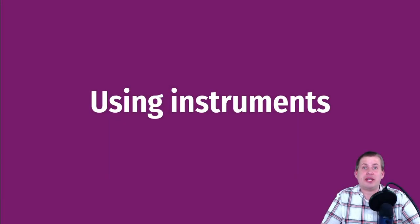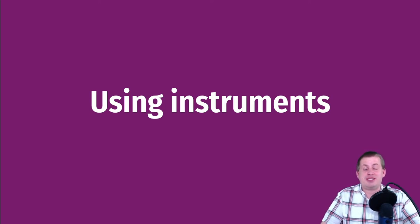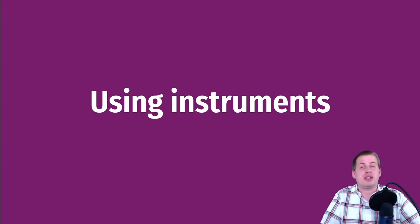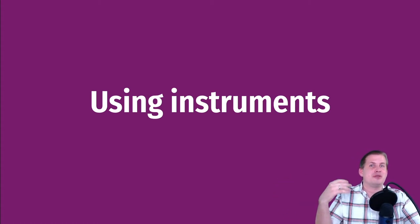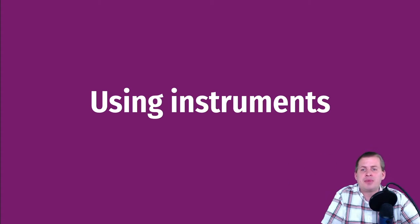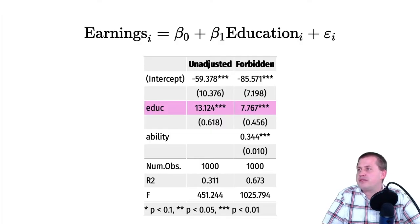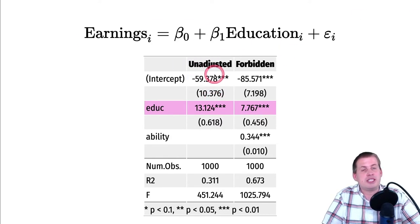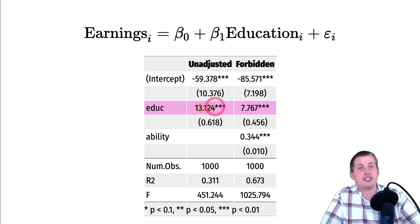Now that we've talked about what instruments are and how to make sure they're good, we need to talk about how to actually use them in practice — what we mean when we say using an instrument splits the policy into the exogenous part and the endogenous part. Going back to this model: if we don't adjust for ability or other confounders, we find that education causes wages to increase by thirteen dollars an hour — but that is wrong.